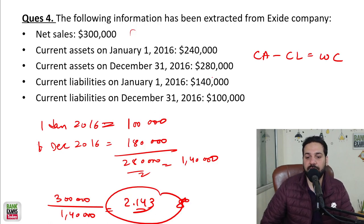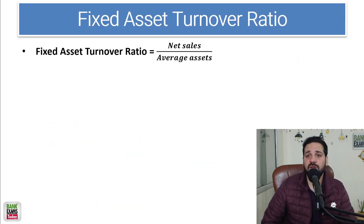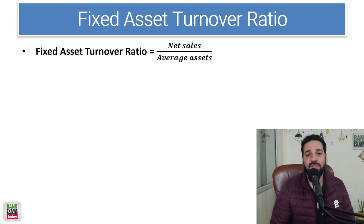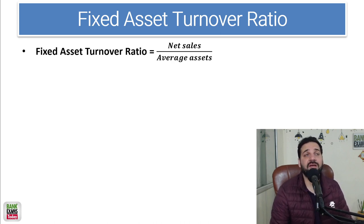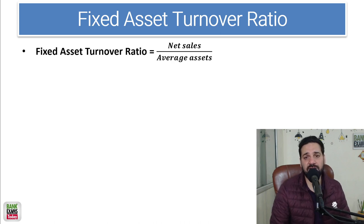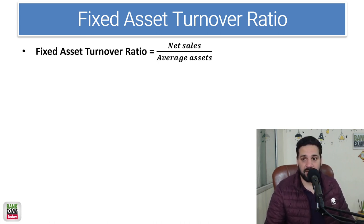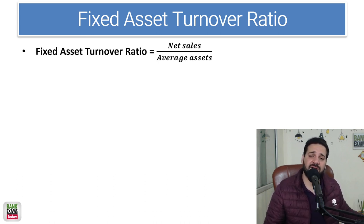Fixed asset turnover ratio is net sales divided by average fixed assets — how many assets are needed to generate sales. If a business can make more sales with fewer assets, that business is doing well and is very efficient. If sales are low with the same amount of assets, that means the business is not operationally as good.